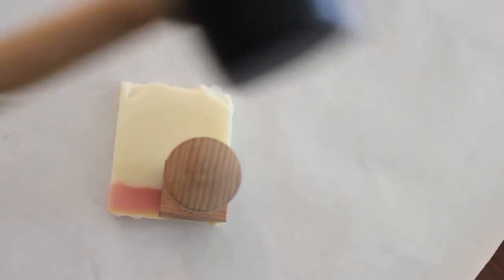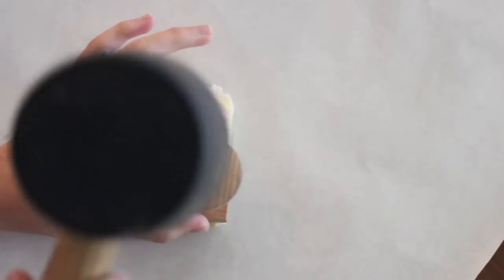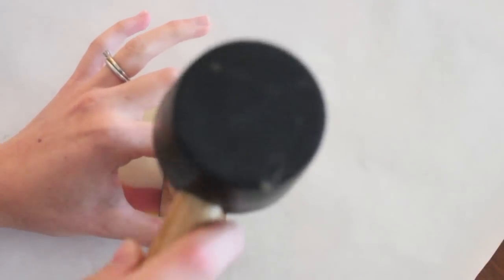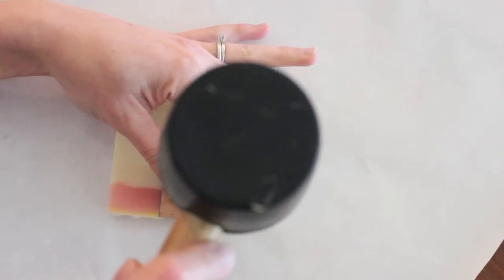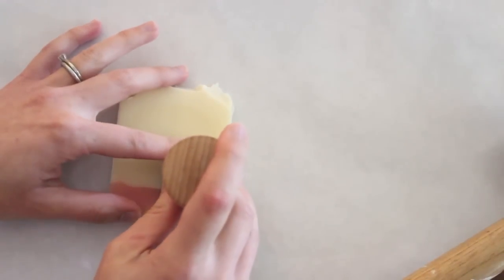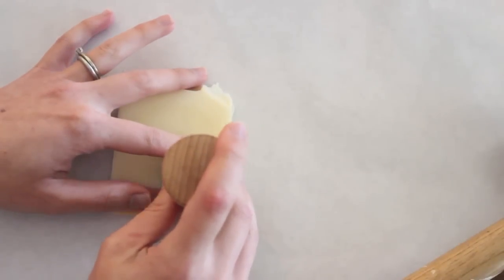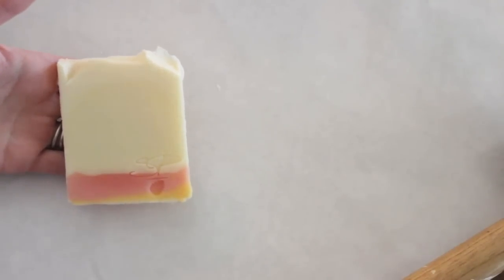Grab my mallet right here. I'm going to stamp once in the middle, top, bottom, left, and right, holding the base, just nice and light little taps, nothing crazy, and then one more time in the middle. And then kind of wiggle your stamp very slightly back and forth and take it out. And you can see this left a really nice clean clear impression so I know that the rest of my soap is ready to go.